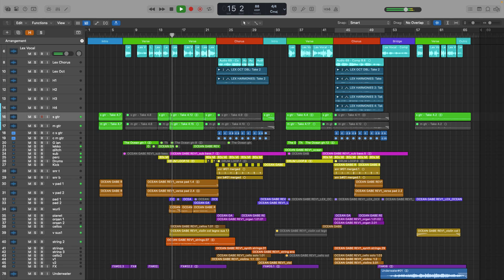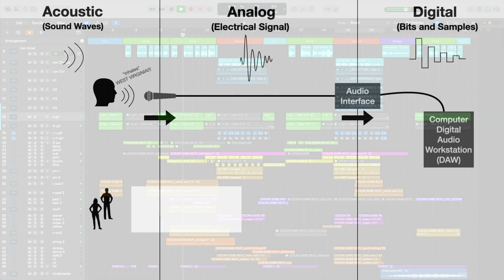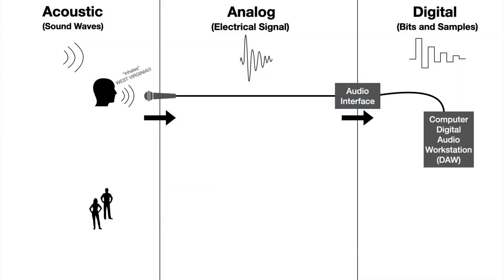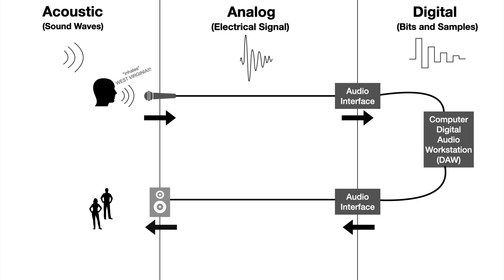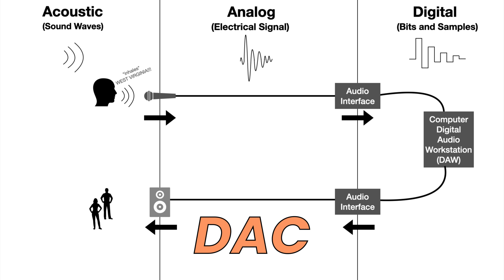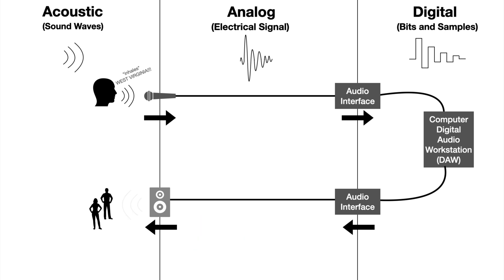Recording is a round trip journey, and in order to hear what you've recorded, we need to reverse the entire process. When it's time to play back the recorded sound, this process happens entirely in reverse. The digital signal stored on the computer is sent back to the audio interface through the USB cable. The audio interface then converts this digital signal back into an analog signal — a process known as digital to analog conversion, or DAC. This analog signal travels through a cable back to the speakers, and finally, the speakers convert that electrical signal back into sound waves, allowing us to hear the original audio on demand, just as it was recorded.